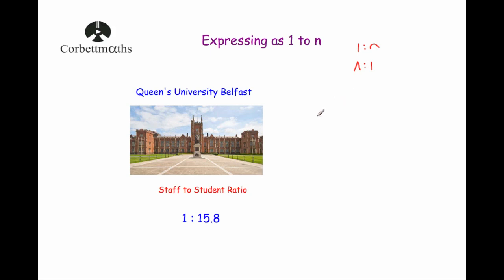Before you go any further, I'd highly recommend you watch the Corporate Mavs video on simplifying ratios. For instance, if you had the ratio 4 to 6 and were asked to simplify it, it would cancel down by dividing both by 2 to get 2 to 3. When expressing ratios in the format 1 to n, you keep going so the number at the front is 1 — dividing both by 2 again gives 1 to 1.5.